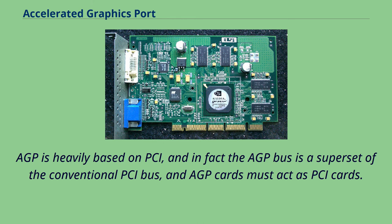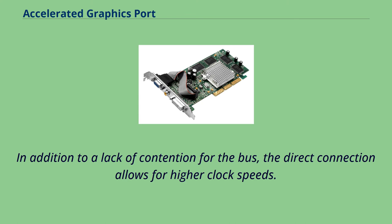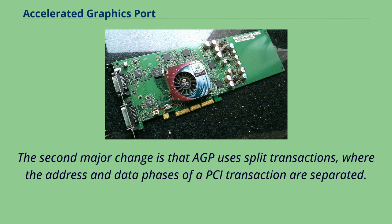AGP is heavily based on PCI; in fact the AGP bus is a superset of the conventional PCI bus, and AGP cards must act as PCI cards. The primary advantage of AGP over PCI is that it provides a dedicated pathway between the slot and the processor, rather than sharing the PCI bus. In addition to a lack of contention for the bus, the direct connection allows for higher clock speeds. The second major change is that AGP uses split transactions, where the address and data phases of a PCI transaction are separated.